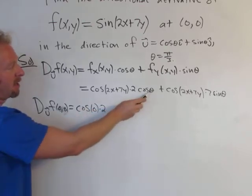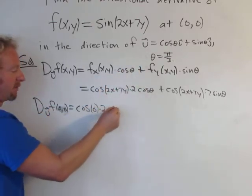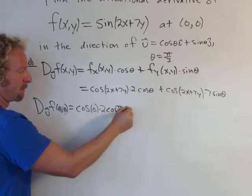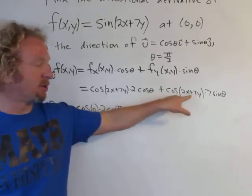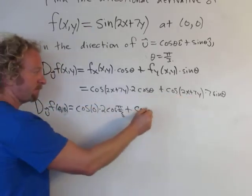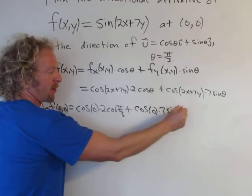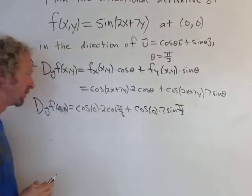And then this theta, theta is π over 3, so it would be cosine π over 3, plus, likewise here, it's going to be cosine 0, which is 1. 7, and then sine of π over 3, because theta is π over 3.